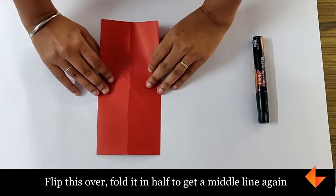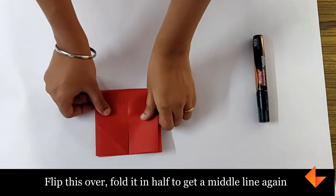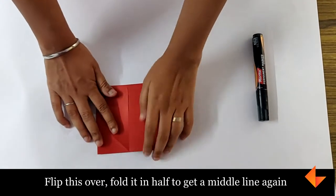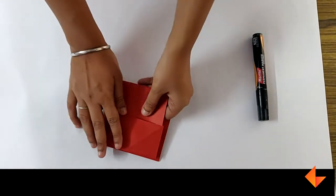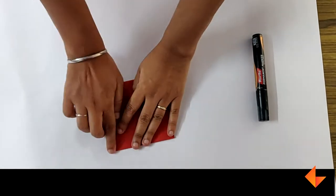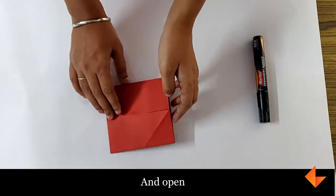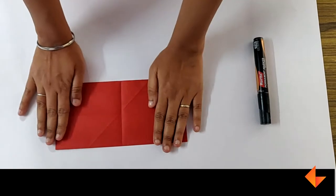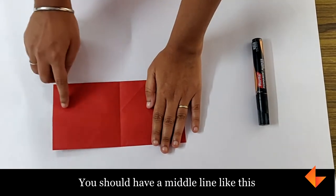Flip this over, fold it in half to get a middle line again. And open. You should have a middle line like this.